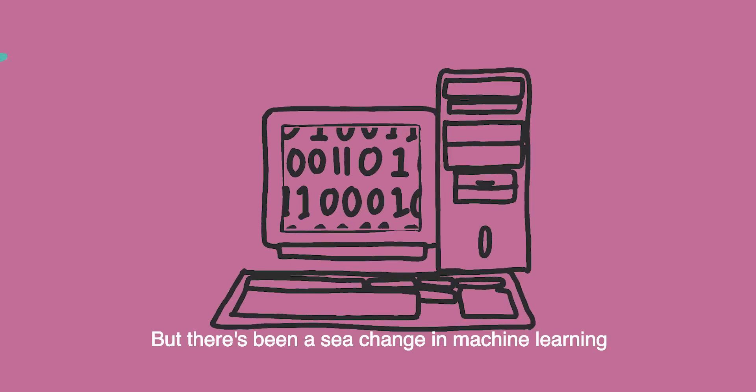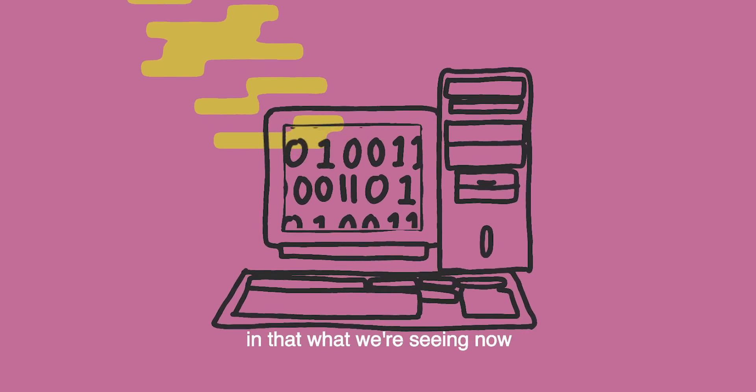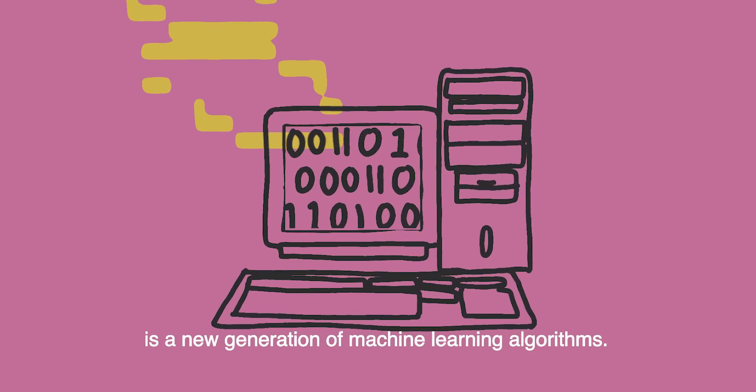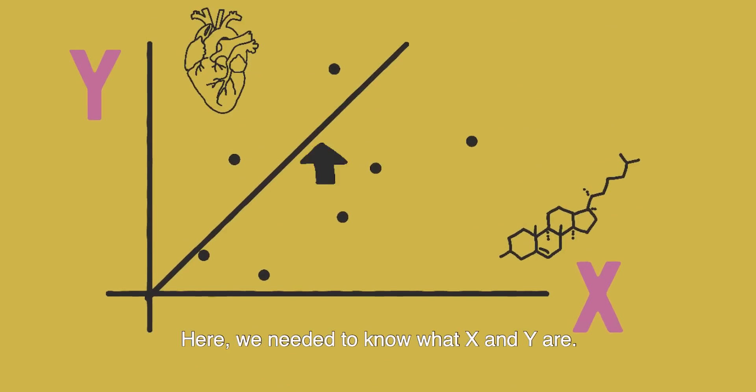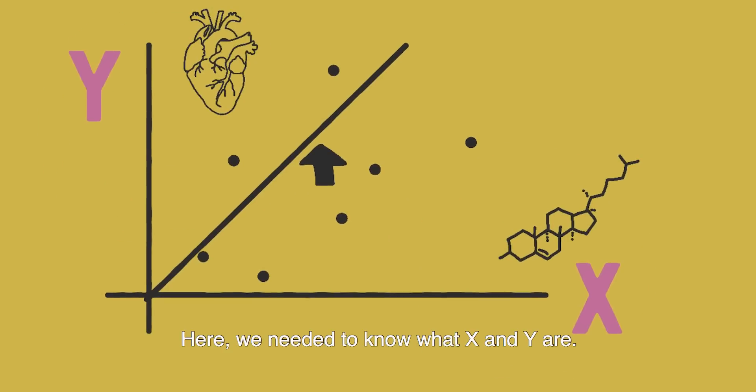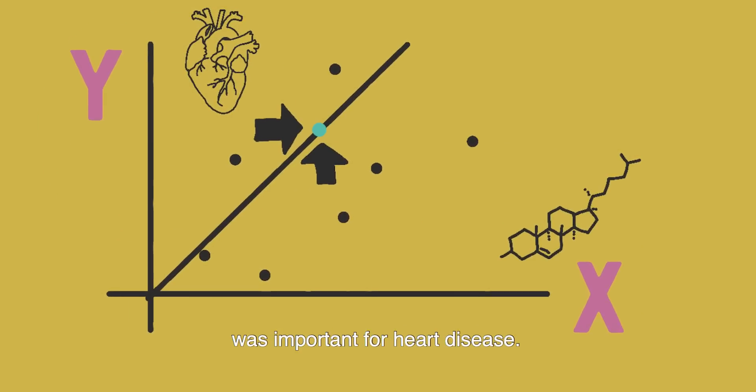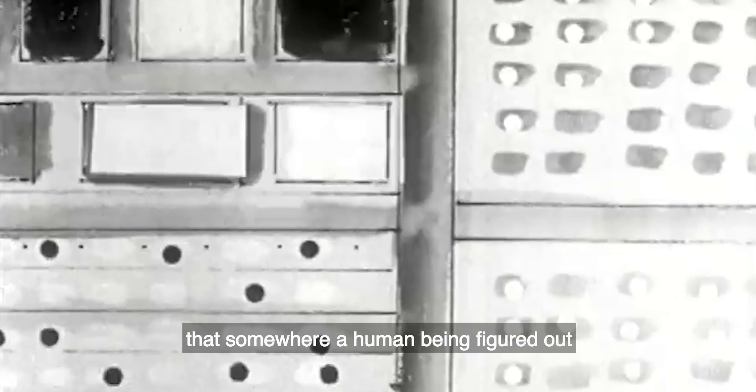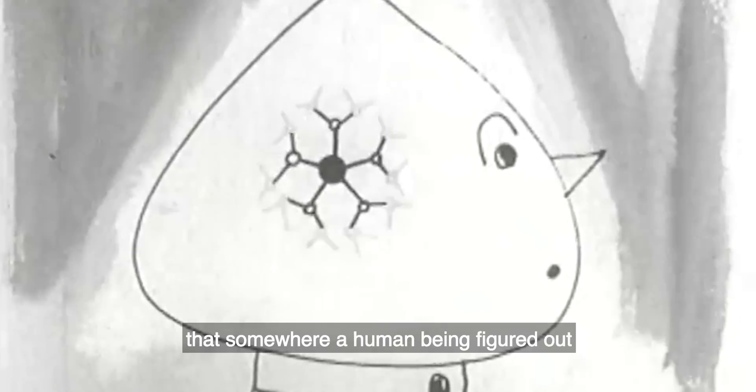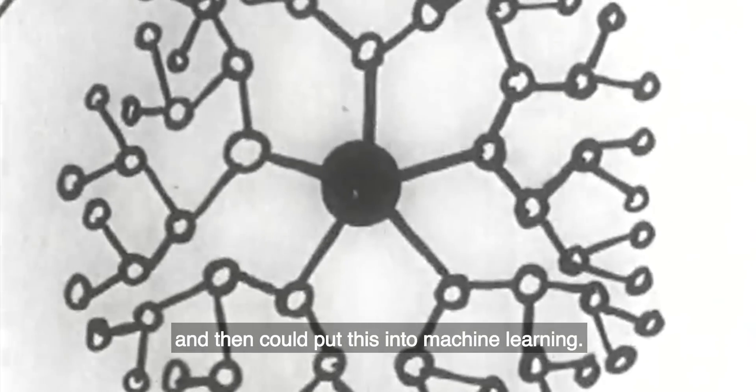But there's been a sea change in machine learning in that what we're seeing now is a new generation of machine learning algorithms. Here we needed to know what x and y are. We needed to know that cholesterol was important for heart disease. That's a determining factor that somewhere a human being figured out and then could put this into machine learning.